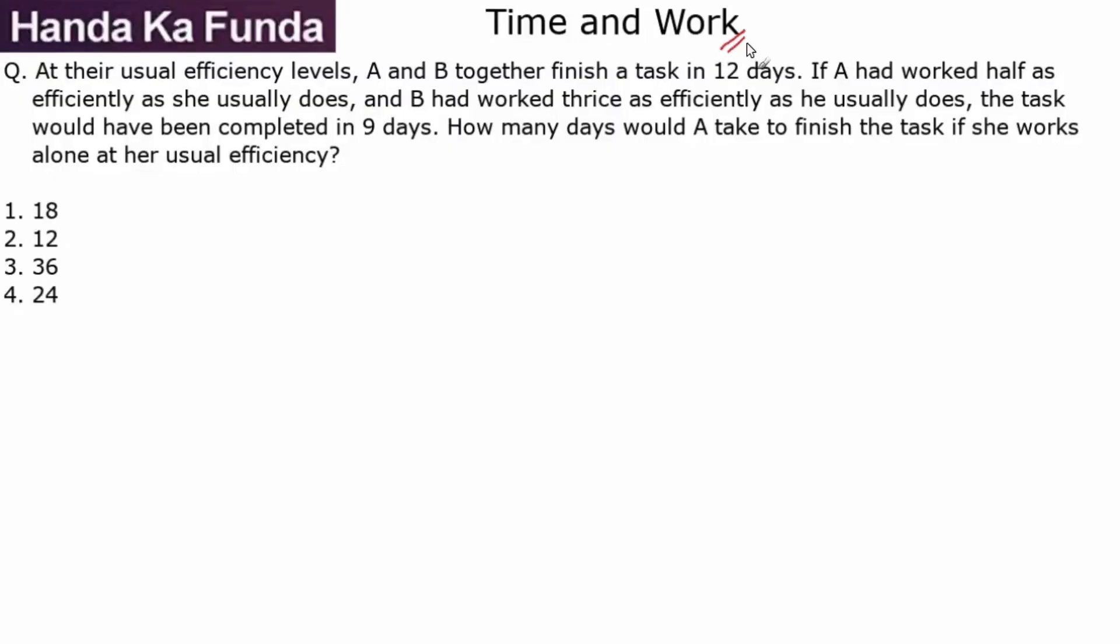Hi everyone, welcome to another question on time and work. At their usual efficiency levels, A and B together finish a task in 12 days, which means that the work that needs to be done is 12 times (a + b), where a is the amount of work A does in one day and b is the amount of work B does in one day.